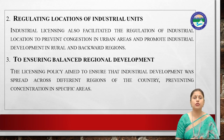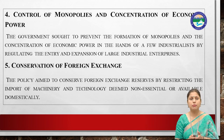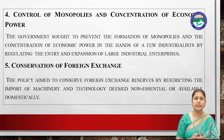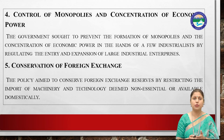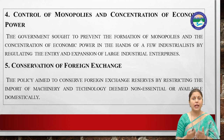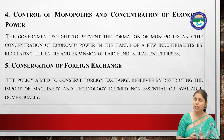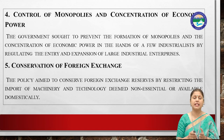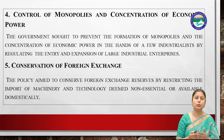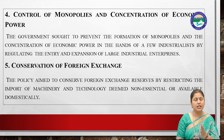The fourth objective was the control of monopolies and concentration of economic power — to prevent wealth from concentrating in the hands of a few people. Therefore, the entry and expansion of big enterprises and large industries was regulated through the government licensing system.